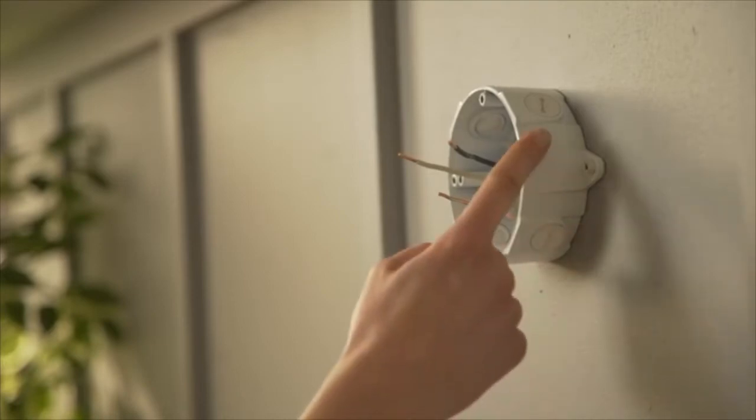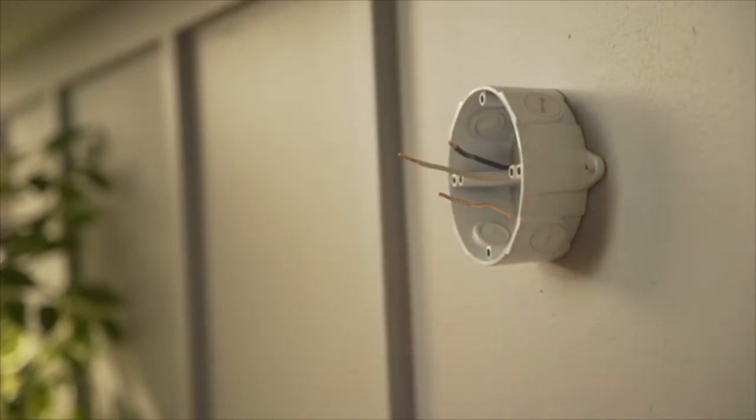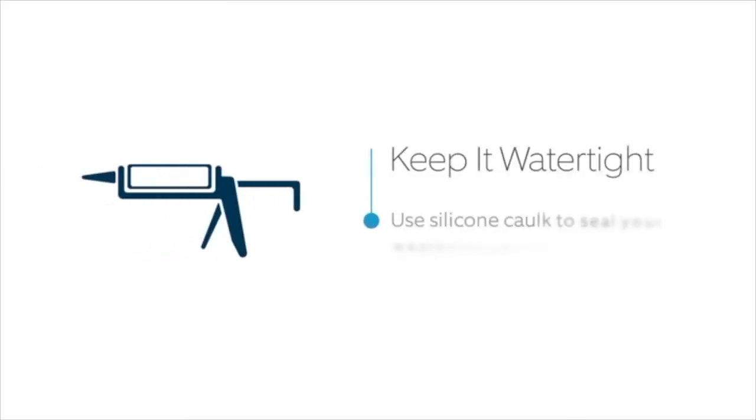Check the weatherproof caps on your junction box to see if they're installed and are watertight. If the caps aren't watertight, you'll need to use a silicone caulk to create a weatherproof seal. It's important that no water gets into the junction box.